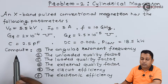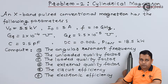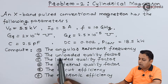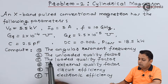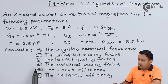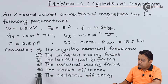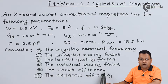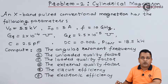We are asked to compute: in Part A, the angular resonant frequency; in Part B, the unloaded quality factor; in Part C, the loaded quality factor; in Part D, the external quality factor; next, the circuit efficiency; and lastly, the electronic efficiency. Let us begin solving for Part A.